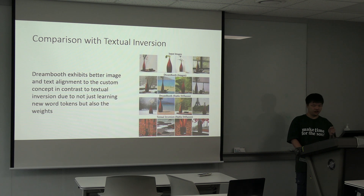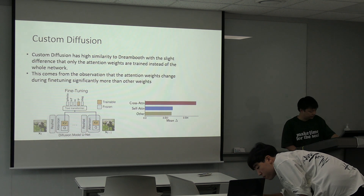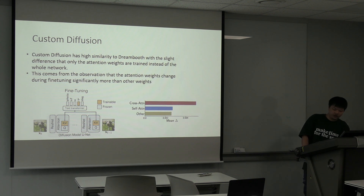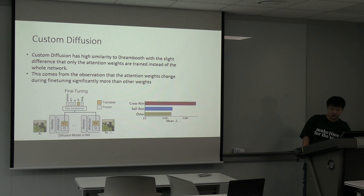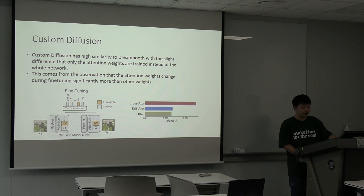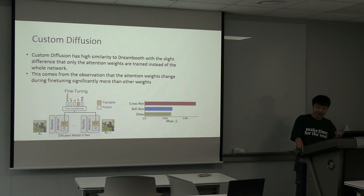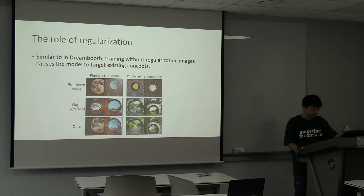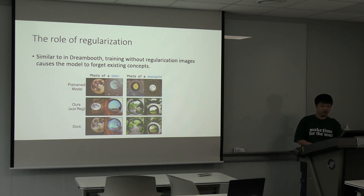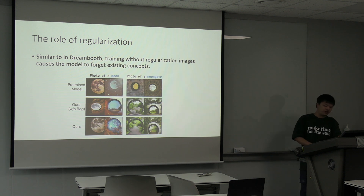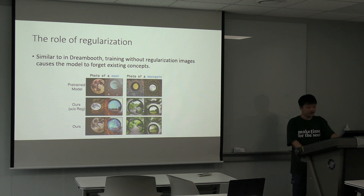Now we'll go through Custom Diffusion. Custom Diffusion is actually really similar to Dreambooth, with a slight difference of only changing the attention weights instead of the entire neural network. This comes from the observation that during fine-tuning, the attention weights are the weights that change the most compared to the other weights. So for custom concept text-to-image generation, only the attention weights and the text tokens are learned. Similar to Dreambooth, they also do regularization, where they train so as not to forget pre-existing concepts. As can be seen here, while learning the new custom concept of Moongate, the previous concept of Moon is forgotten — so with regularization, this essentially prevents this forgetfulness.